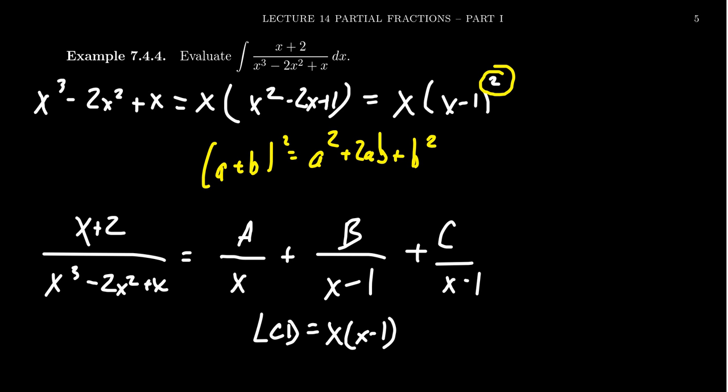Think of it like roommates ordering one pizza together. One person wants pepperoni, another wants bacon, and the third also wants bacon. That doesn't mean you get a pepperoni double-bacon pizza — you just get a pepperoni bacon pizza. Similarly, having two fractions with the same denominator (x-1) doesn't give you (x-1)² in the common denominator.